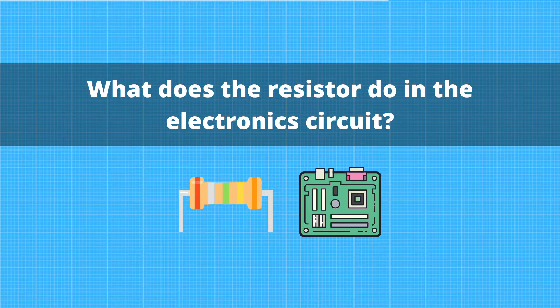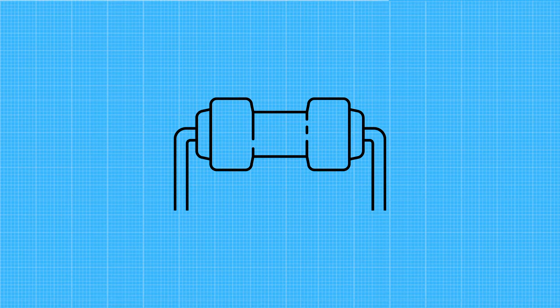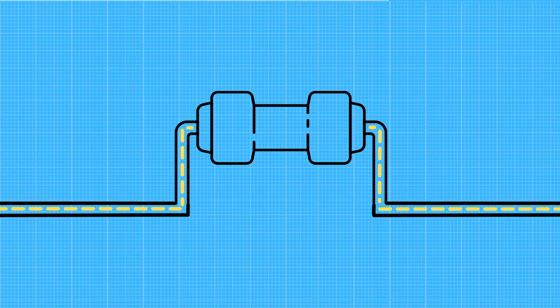It's time to know what resistors do in the electronic circuit. As I said, resistor is an electronic component that controls the flow of current in a circuit and offers resistance to electric current.